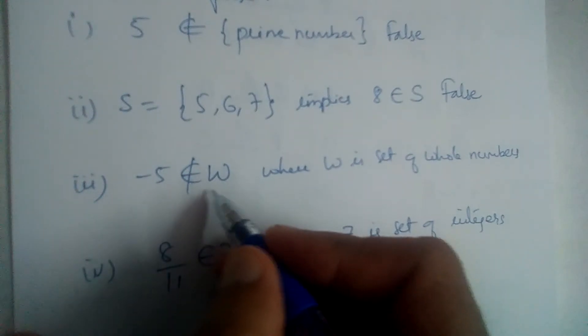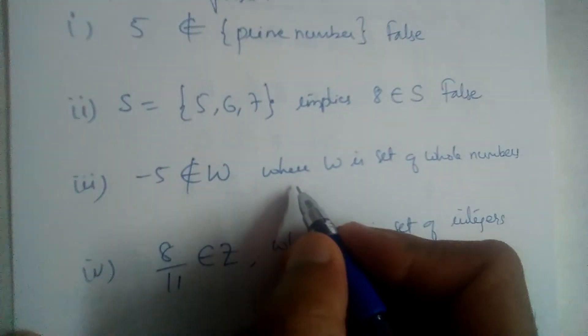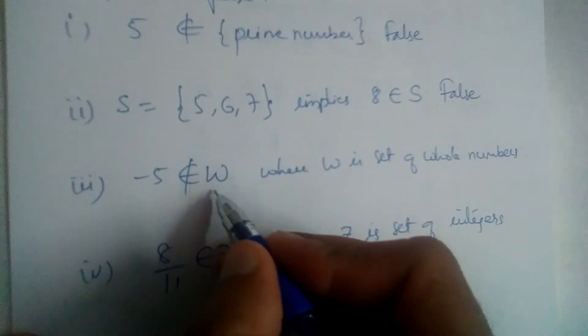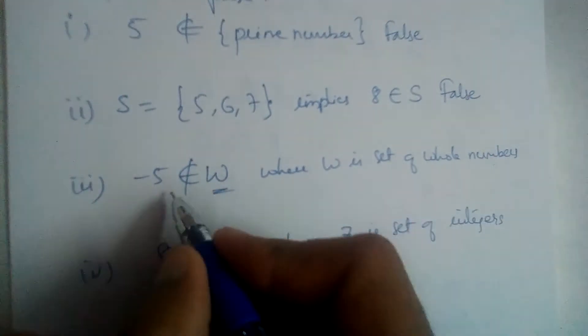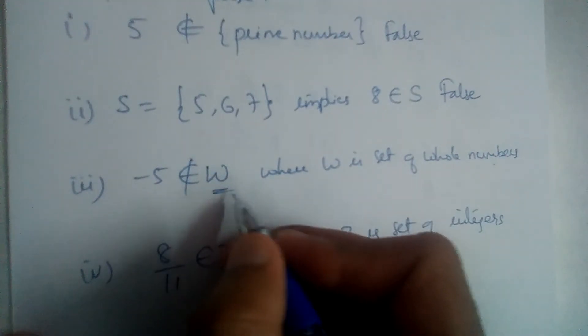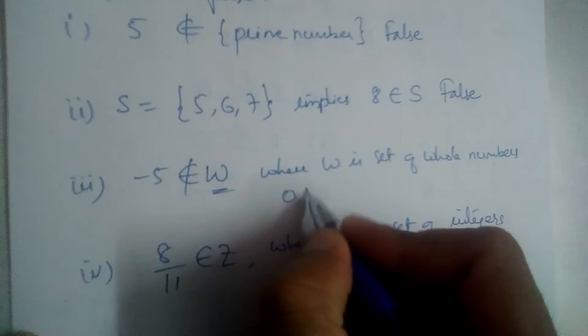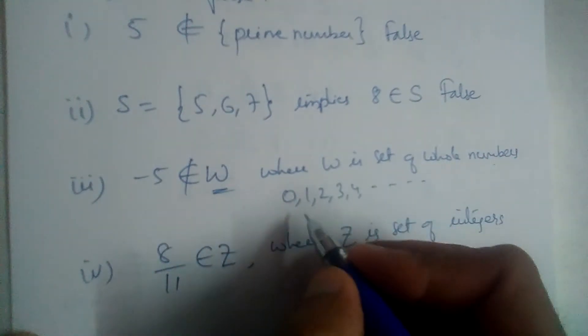Now, minus 5 does not belong to whole numbers. W is a set of whole numbers, right? So minus 5 does not belong to whole numbers. What are whole numbers? 0, 1, 2, 3, 4, 5 and so on, isn't it?